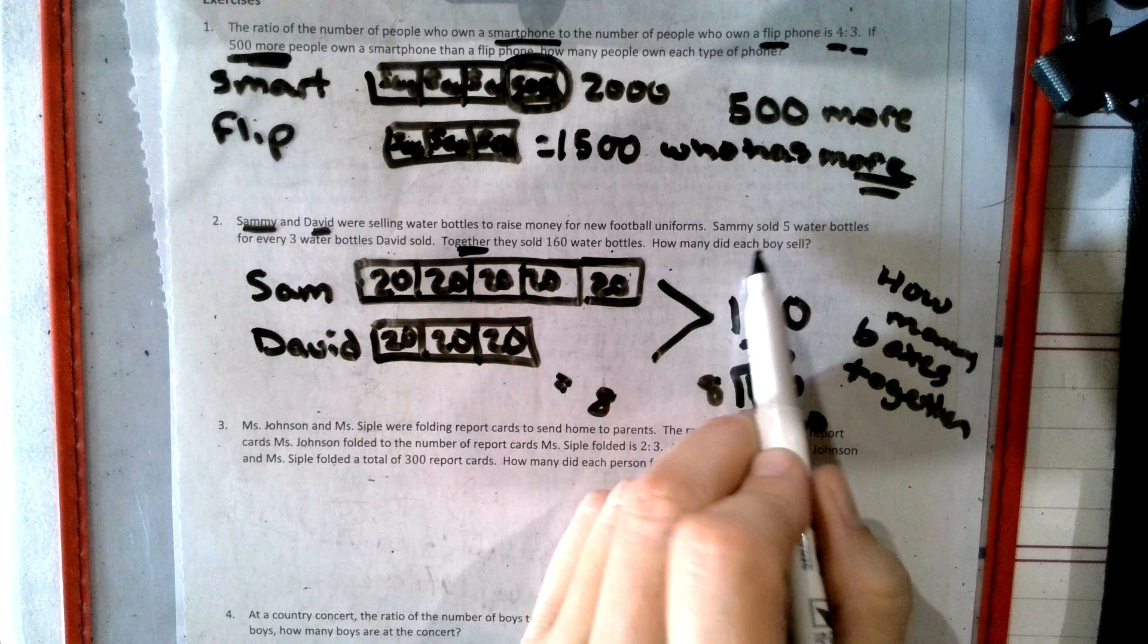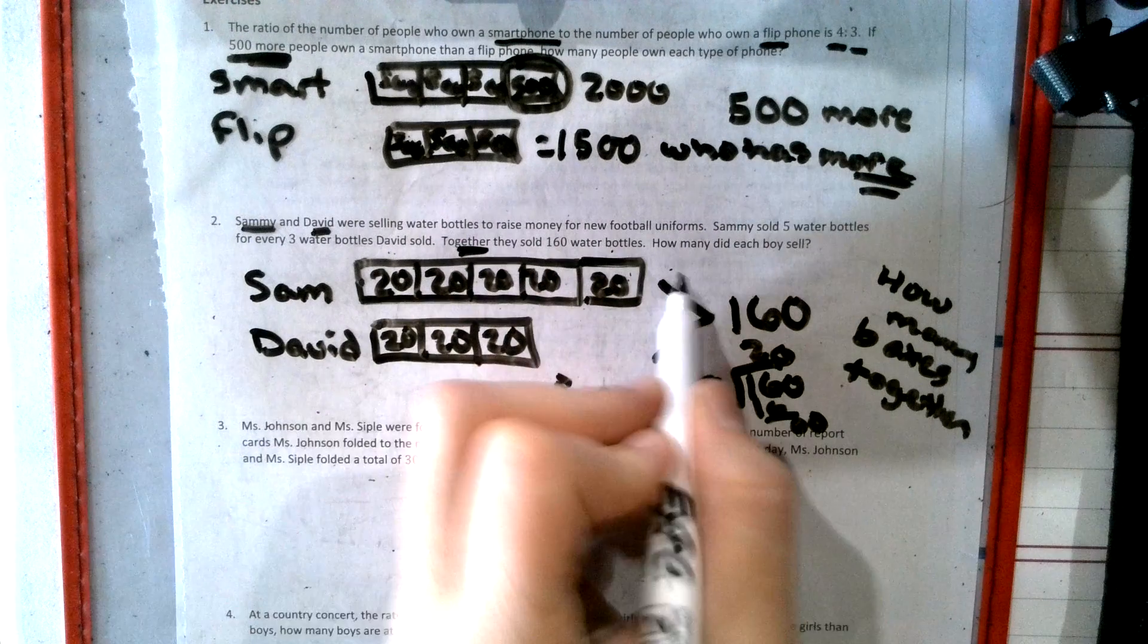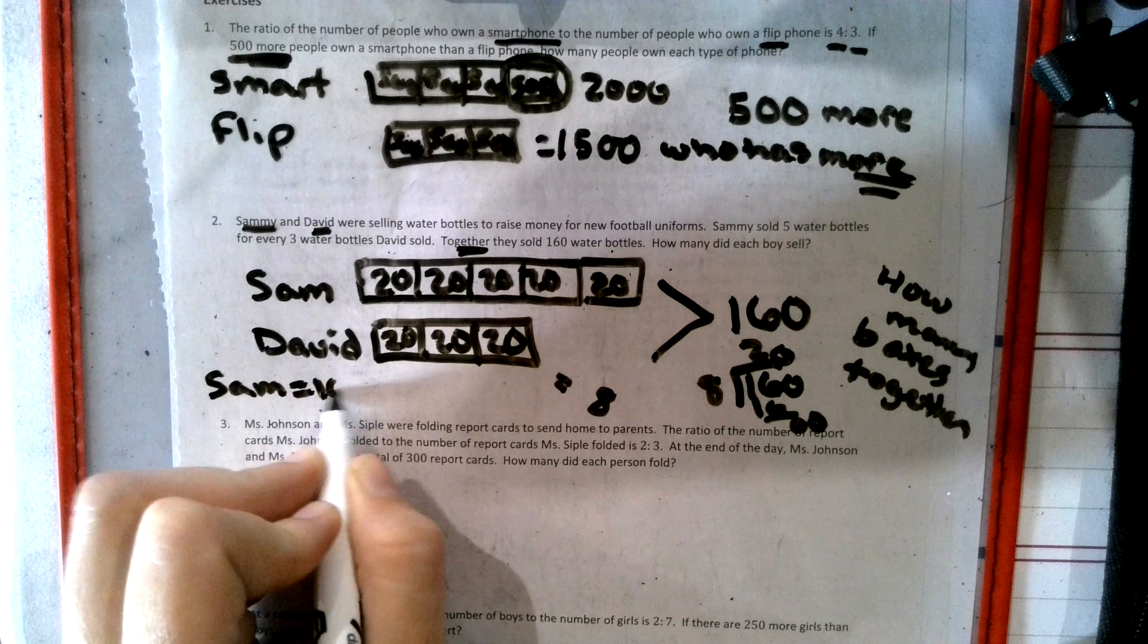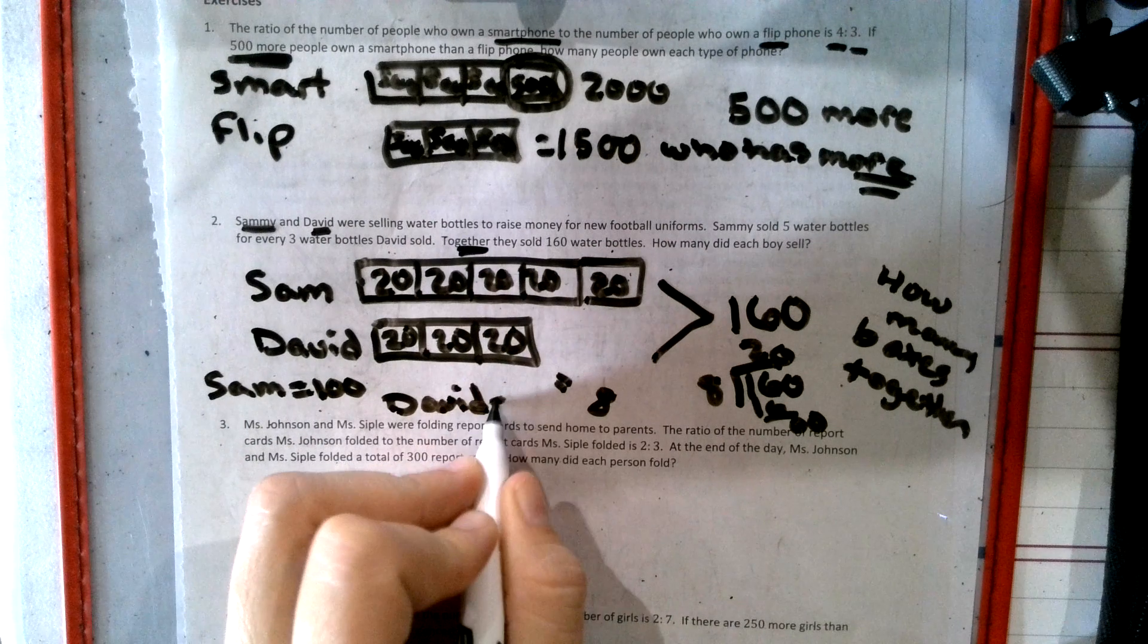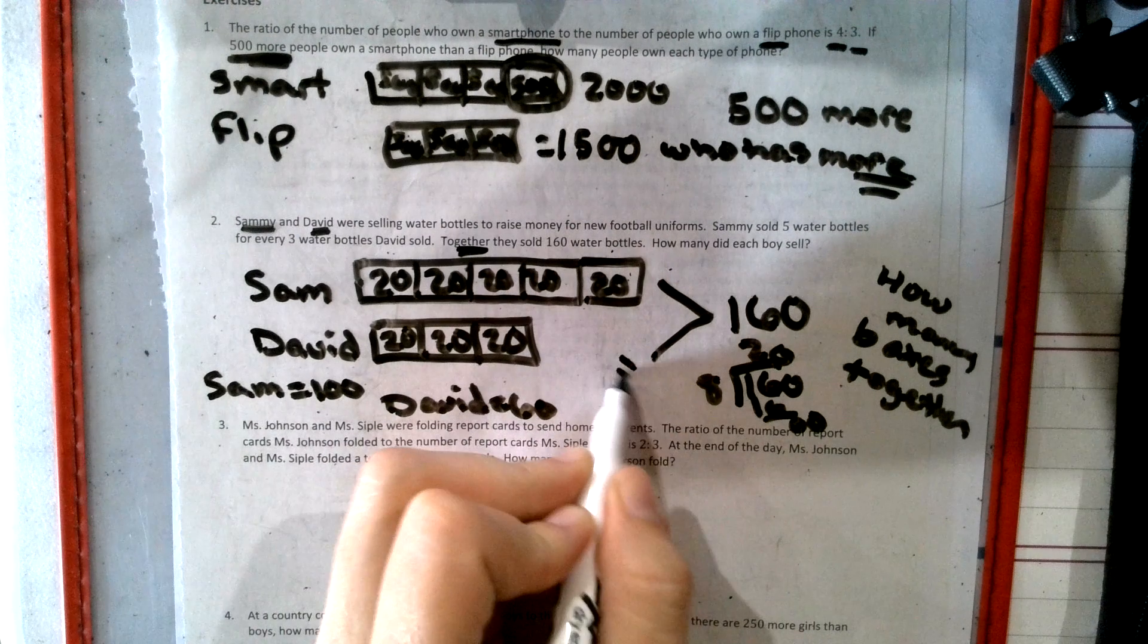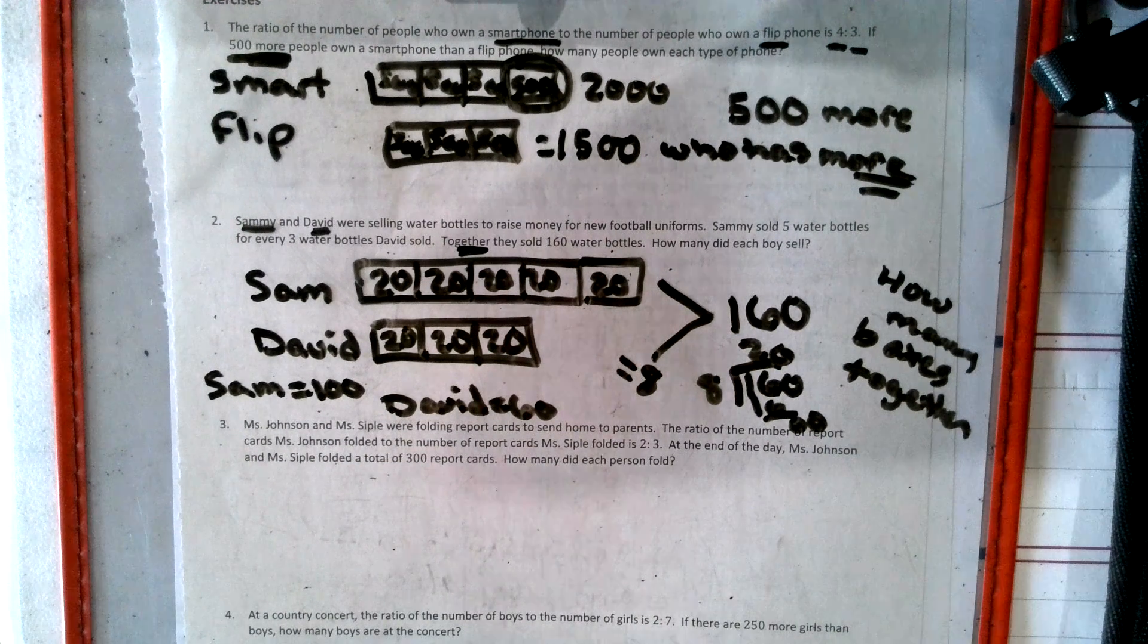So it said, how many did each boy sell? Well, Sammy totals 100. So Sam was 100, and David was 60. I'm going to move this eight up a little bit. Together. They had eight boxes.